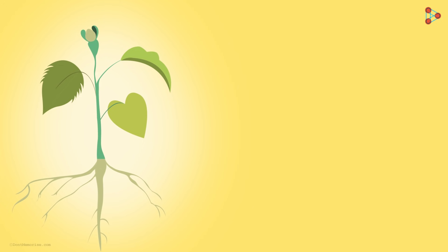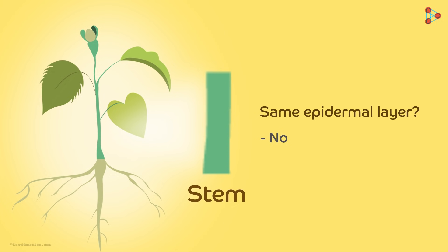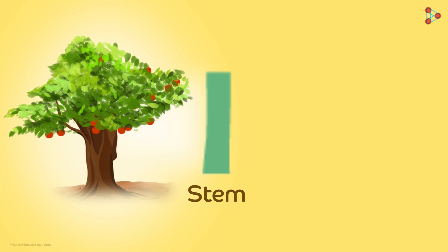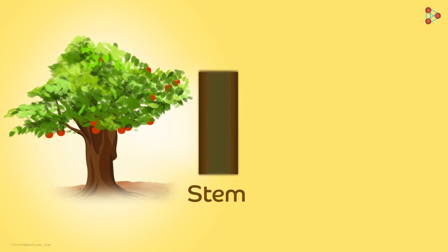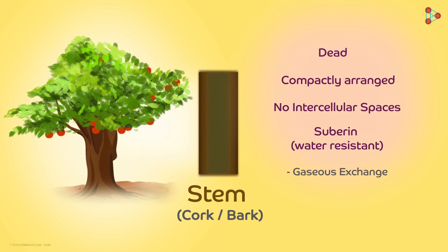We have been talking about the leaves and roots — now let's talk about the stem. Do you think the stem will also possess the same type of epidermal layer as that in leaves and roots? Actually not! In fact, stems of huge trees do not even possess a proper epidermal layer. In plants which are much older, the epidermis is replaced by secondary meristem, which we usually refer to as the thick cork or simply the bark. Cells of these layers are dead and compactly arranged without intercellular spaces. Also, we find deposits of suberin which regulates gaseous exchange and water loss.